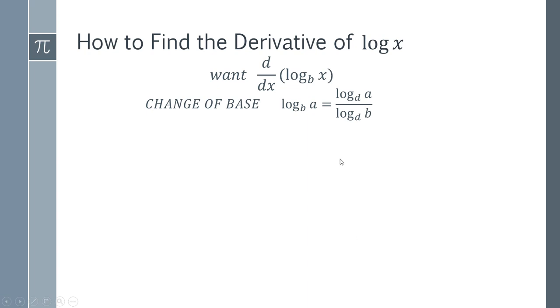The change of base rule says that if you've got log b of a, so that's log to the base b of some function a or some number a, in our case a is going to be x, you can change it to be log d, where d is just anything that you like and you can choose that as long as you find log d of a, which is this part of the logarithm, divided by log d of your old base b.